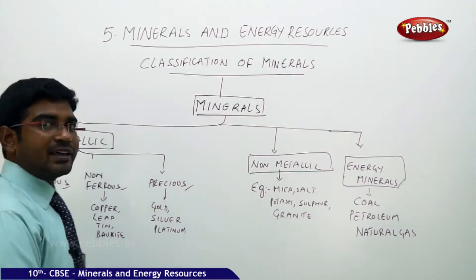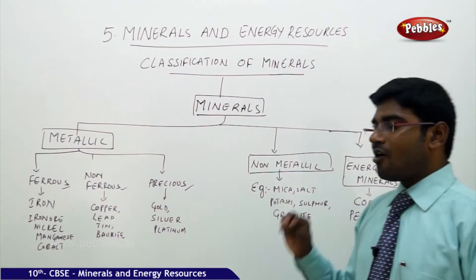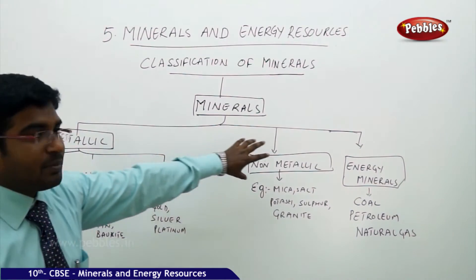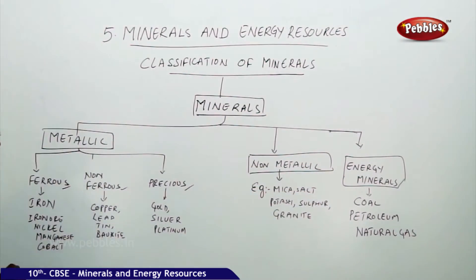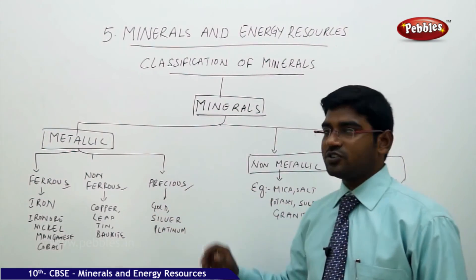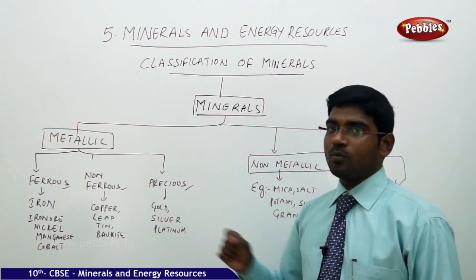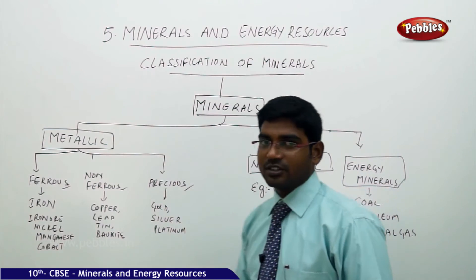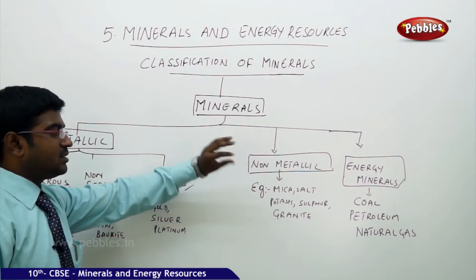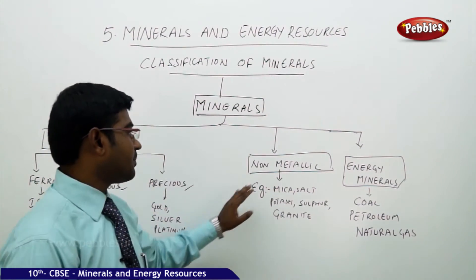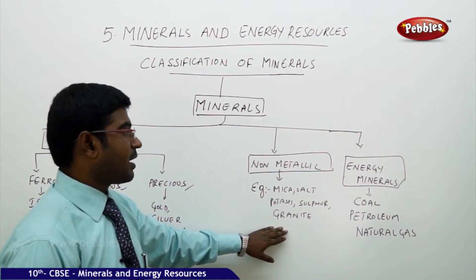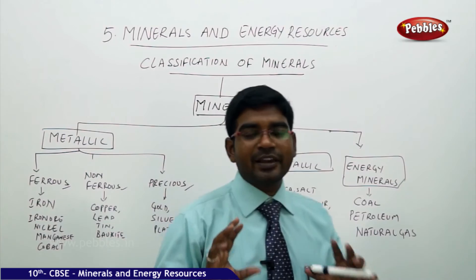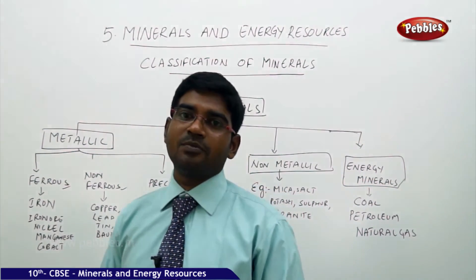Beyond metallic and non-metallic, we also have energy minerals available in nature — coal, petroleum, and natural gas. Originally minerals were broadly categorized into two groups, but after energy minerals were discovered, the classification expanded to three: metallic, non-metallic, and energy resources. This gives us a clear picture of what minerals are and how they are categorized.